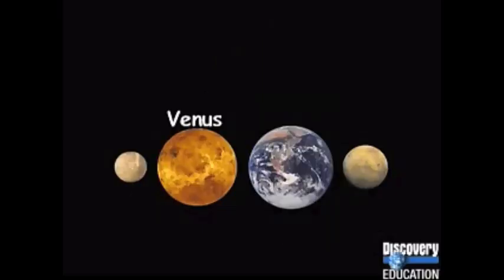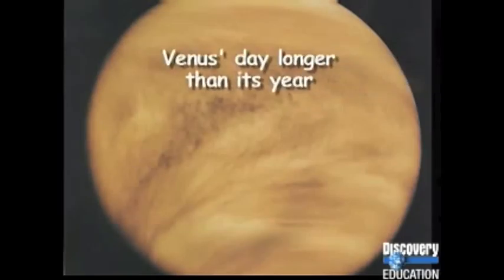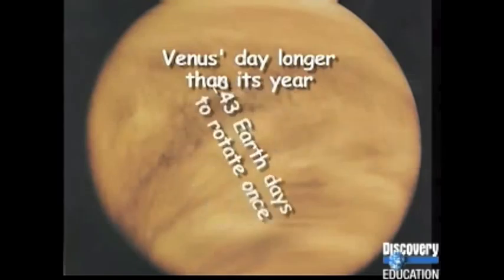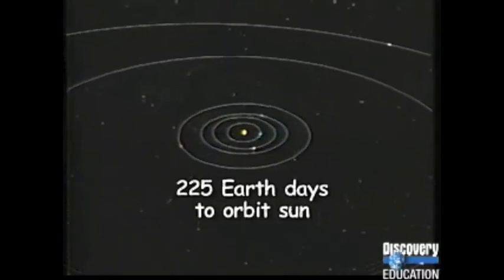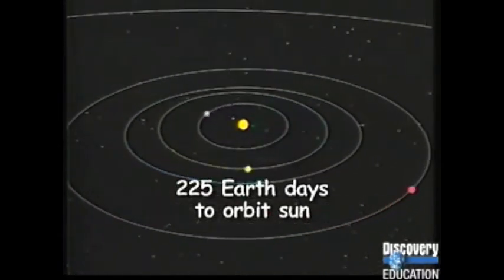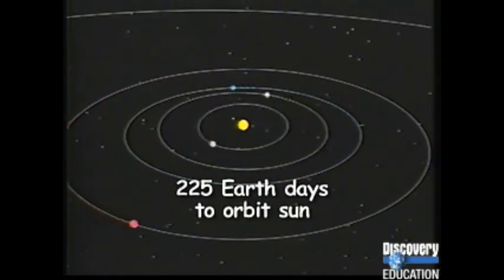The second planet from the Sun is Venus. It is often called Earth's sister planet, because they are about the same size. Venus is the closest planet to Earth. One unusual thing about Venus is that its day is longer than its year. It takes the planet 243 Earth days to rotate once, so its day is over 8 Earth months long. Venus orbits the Sun in only 225 Earth days, or about 7 and a half months, so the planet's year is actually two weeks shorter than its day.